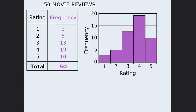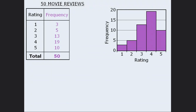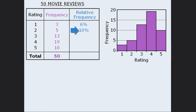Here, we can immediately see that more people gave the movie a high rating than a low one. Another way to show the distribution of data is to calculate the relative frequencies — that is, the percent of the data that meets a certain criteria. For example, if 3 of the 50 people gave the movie a rating of 1, this is the same as saying that 6% of the people gave the movie a rating of 1. Likewise, if 5 out of 50 people gave the movie a rating of 2, the relative frequency here is 10%.